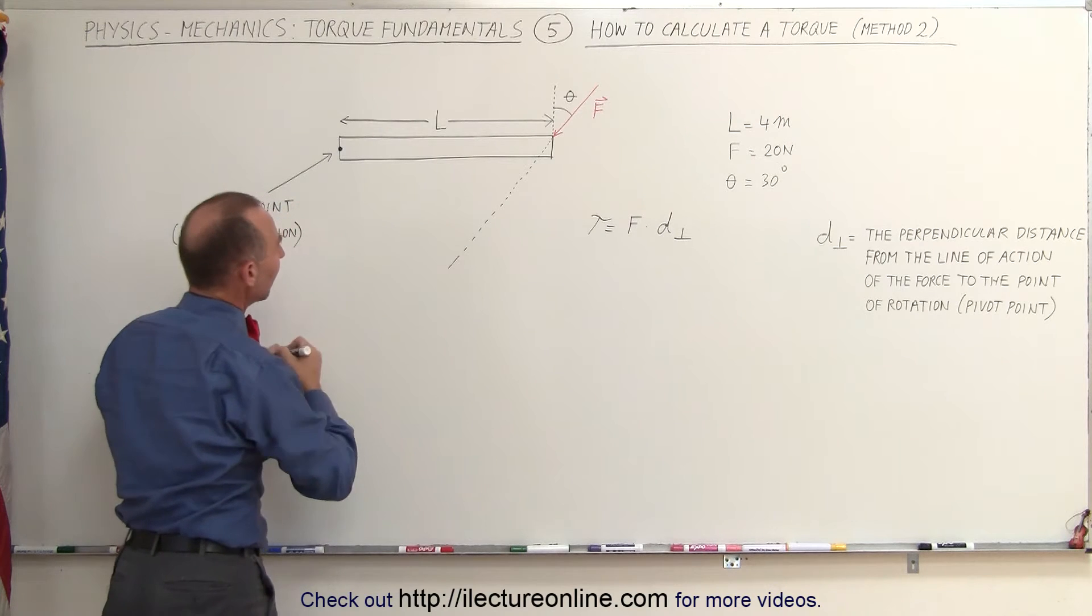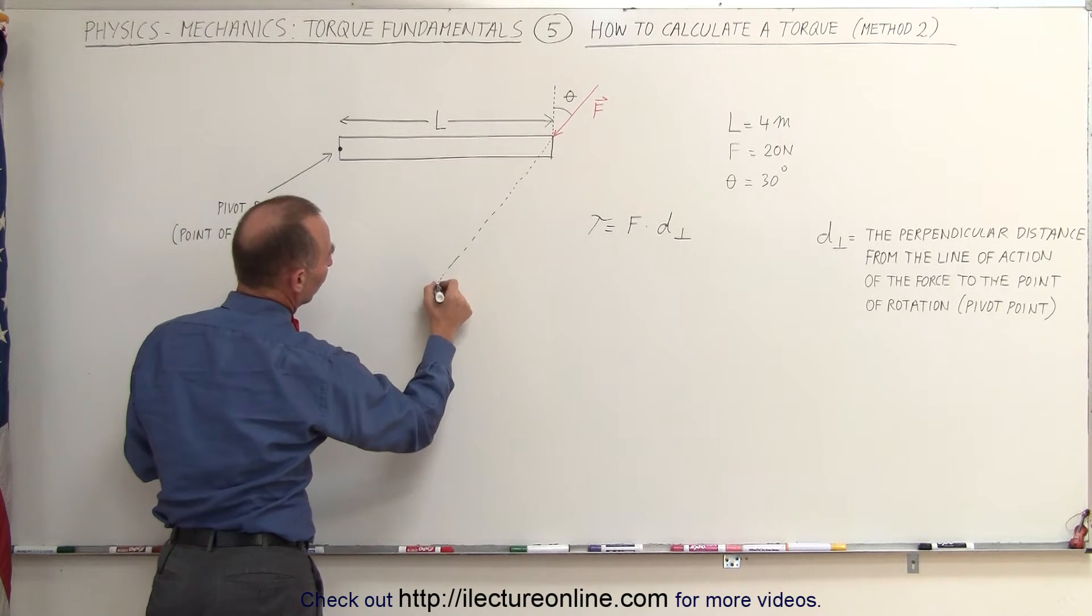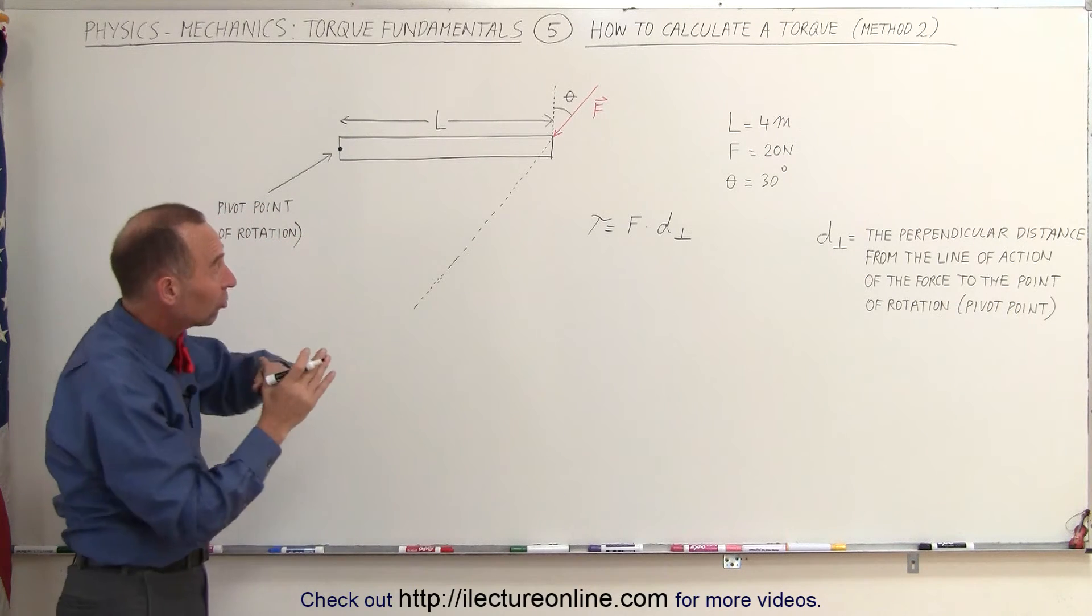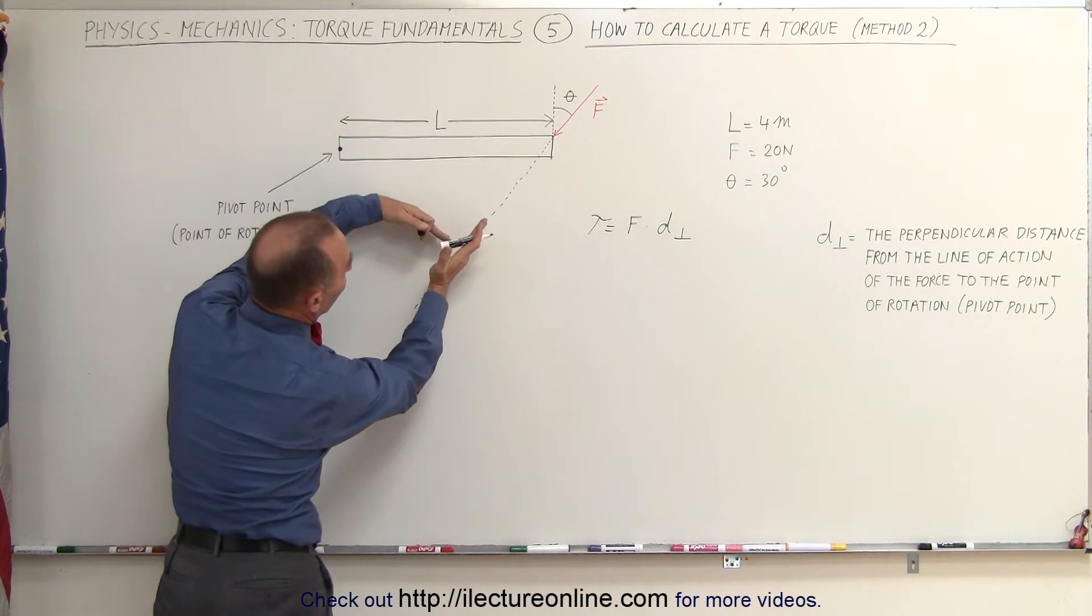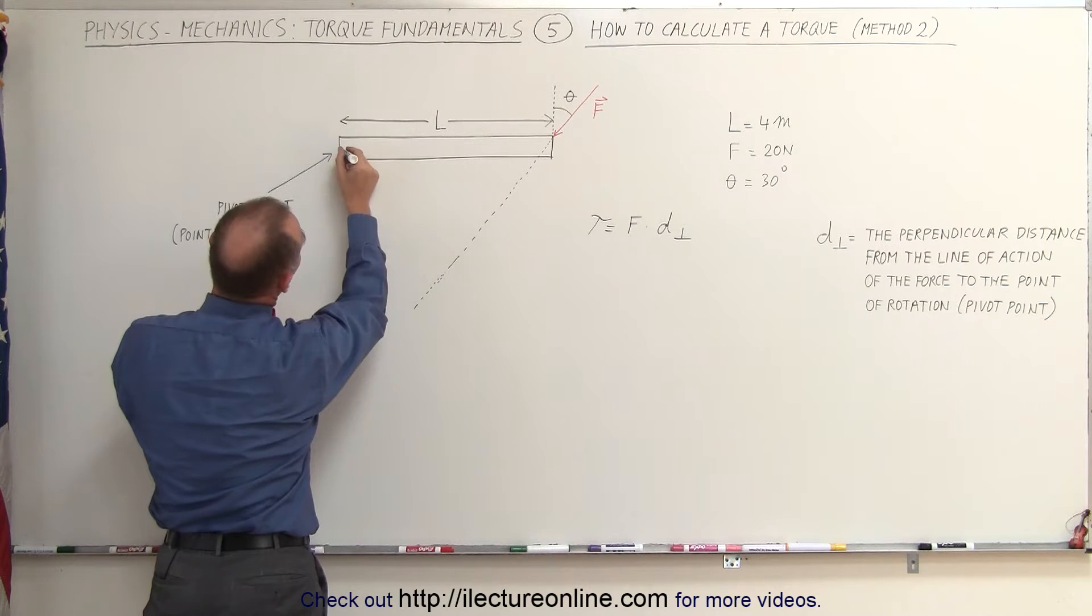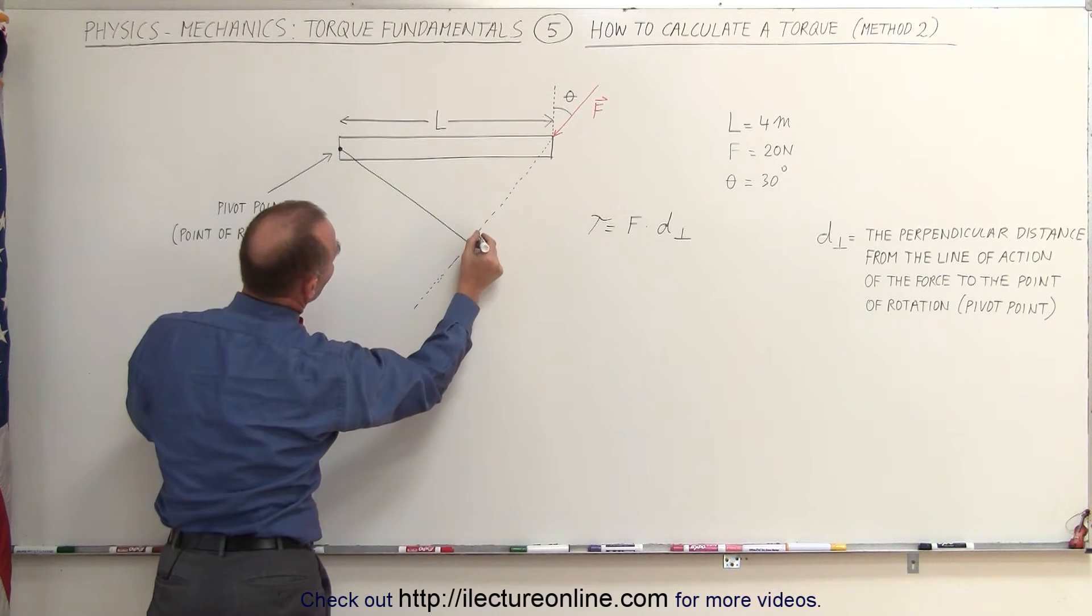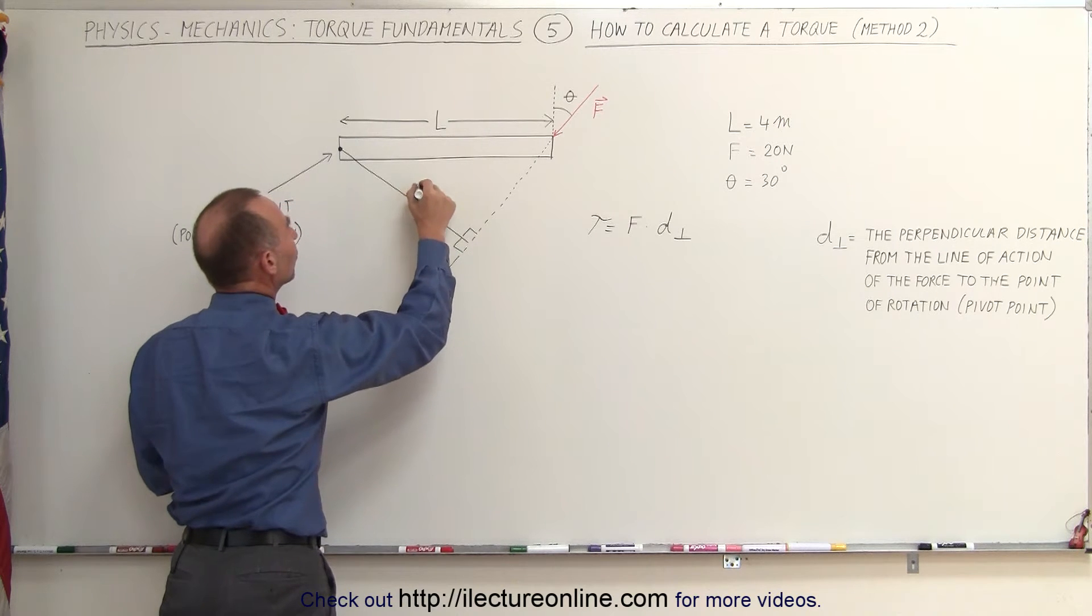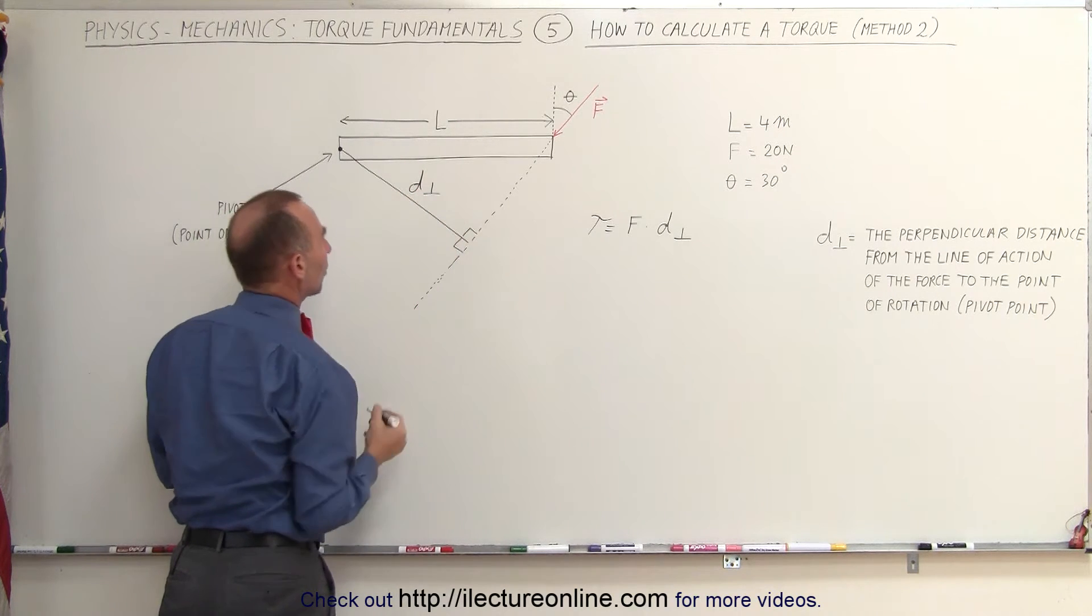If we now draw a line from the pivot point to that line of action of the force and we make sure that the line touches the line of action force perpendicular to the line, we get this line right here. You can see here that this is perpendicular to the line of action of the force. This is called the perpendicular distance.